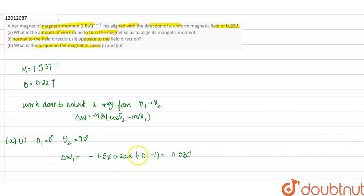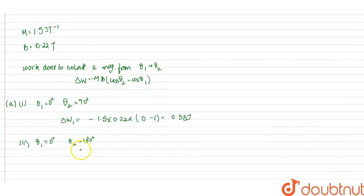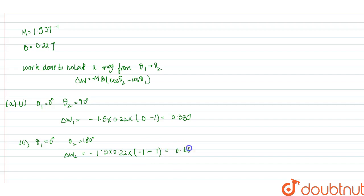In the second case, the opposite orientation means θ₂ = 180°. So ΔW₂ = −1.5 × 0.22 × (cos180° − cos0°) = −1.5 × 0.22 × (−1 − 1) = 0.6 joules. This is the work done in both cases.